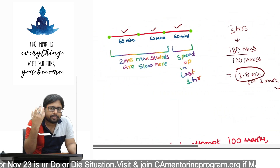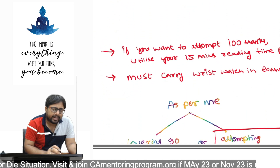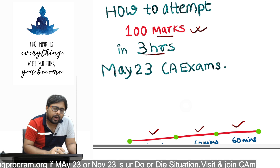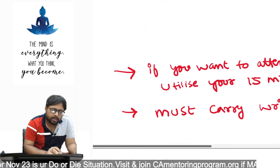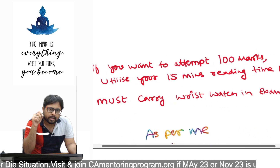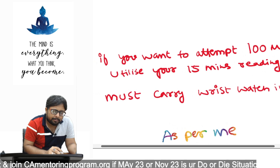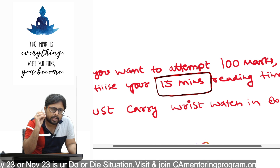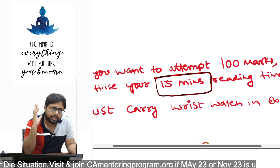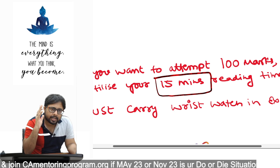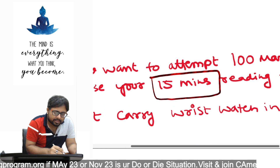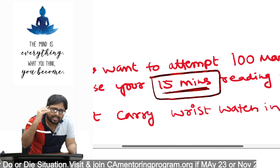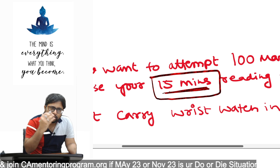My students also tell me, 'Sir, I forgot to carry my watch.' Don't make this mistake. If you really want to attempt 100 out of 100, one thing students forget is the 15-minute reading time. You also get those 15 minutes where you write your roll number and fill in details. You have to utilize that reading time very effectively, because attempting 100 marks properly is challenging — not impossible, but challenging — and you need the support of this 15 minutes.